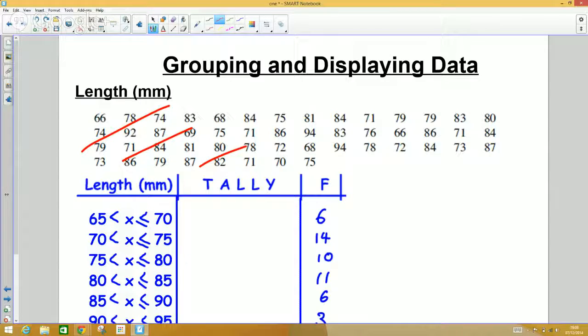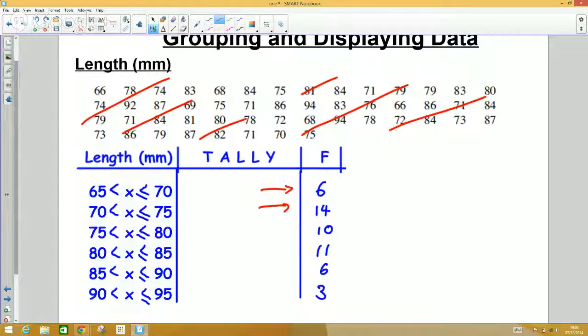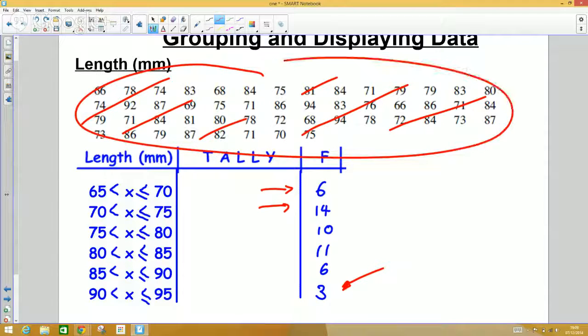We would carry on doing that until eventually we cross out all the data, and we tally ticks into numbers. A good mathematician would check that all those numbers add up to the same number of numbers that appeared here. Now we're ready to put our data into a frequency diagram.